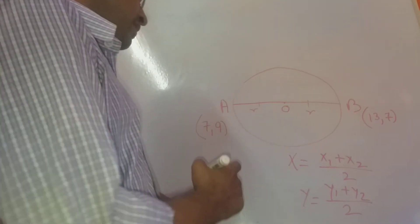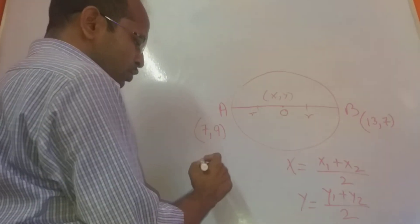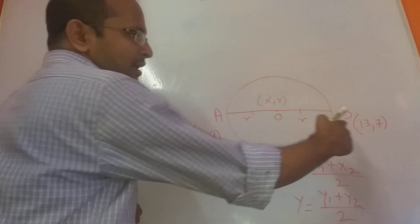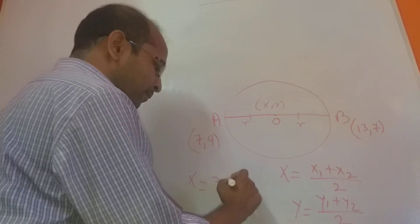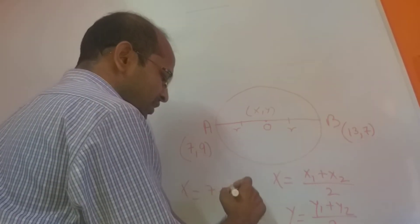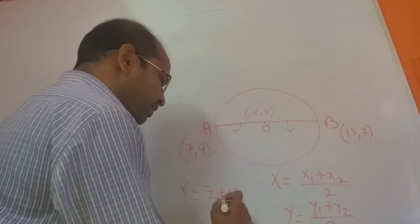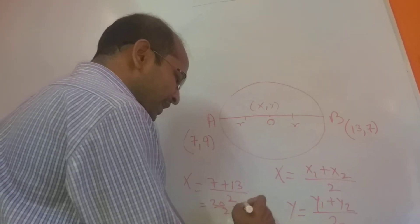Let us find the coordinate of the center of the circle. For X, it will be X1. This is X1, Y1. This is X2, Y2. So what is X1 over here? It is 7 plus X2, which is 13, by 2. So 7 plus 13 by 2 is 20 by 2. X has come 10.